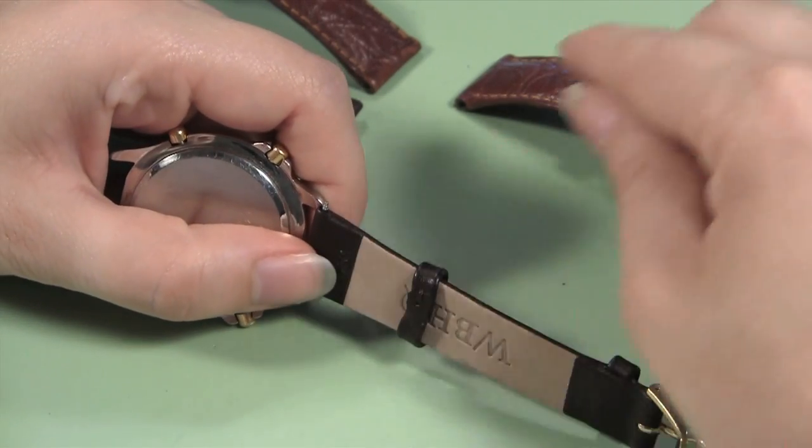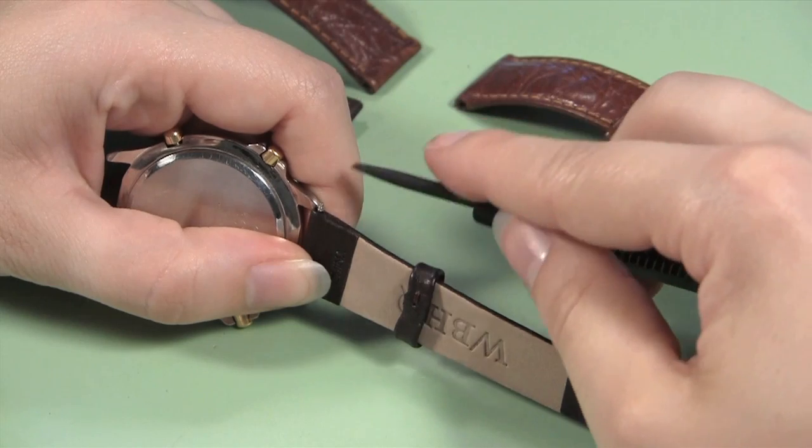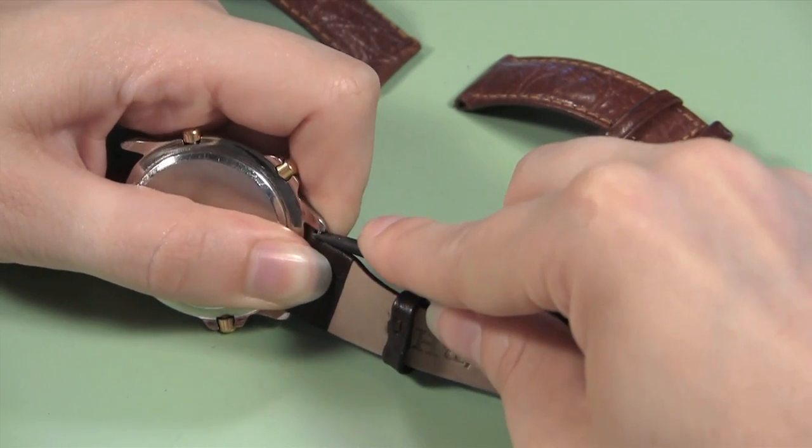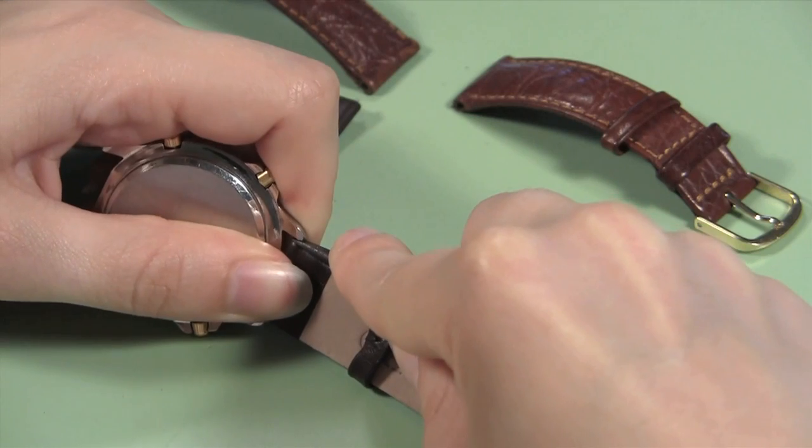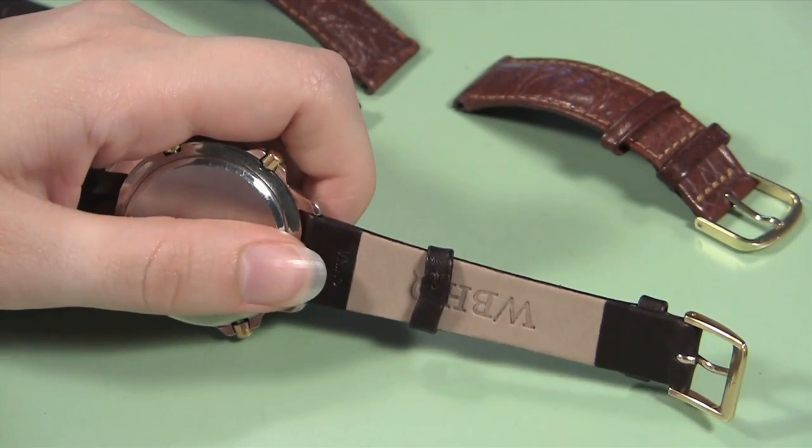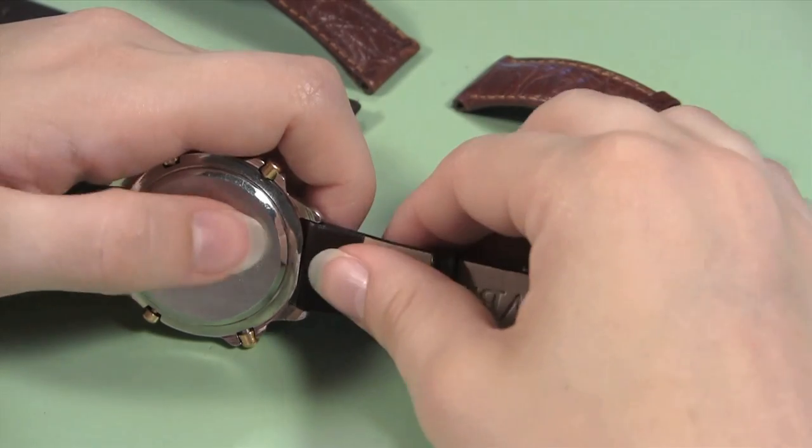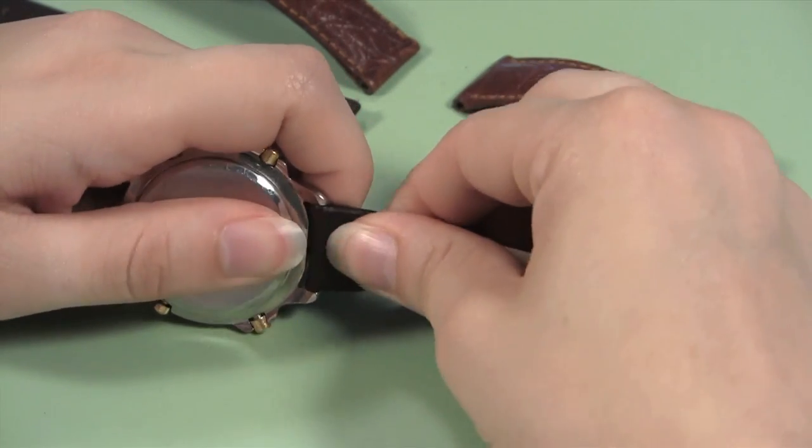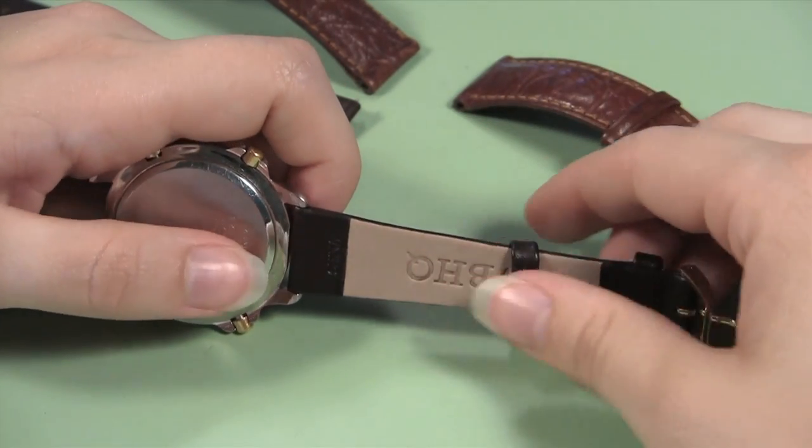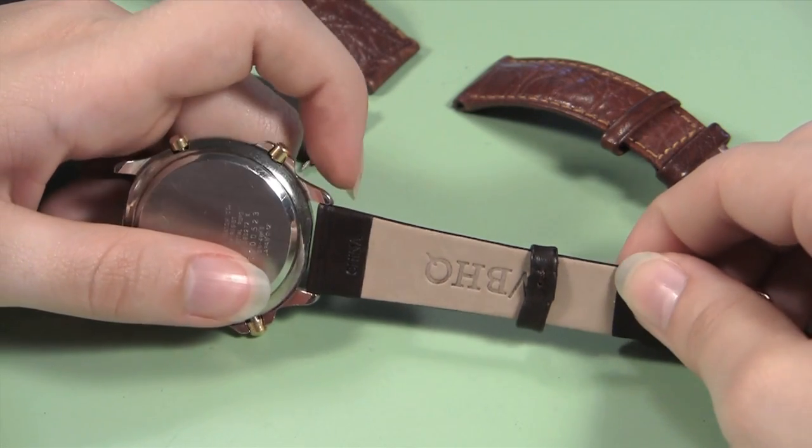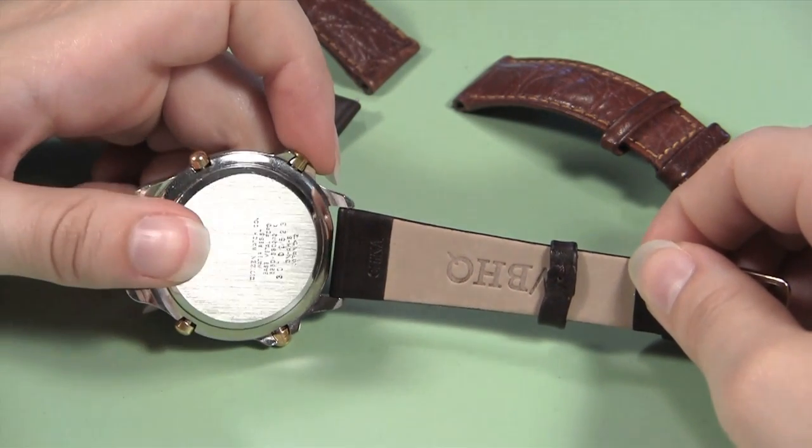Take the forked end of the spring bar tool and position it so you can push one of the spring ends of the spring bar down so it fits under the lug. Carefully move the watch band around in the lugs until you feel the spring bar pop into place. This will happen when the spring bar finds the indentation on the underside of the watch lug. Don't worry if it takes you several tries to get the spring bar in position.